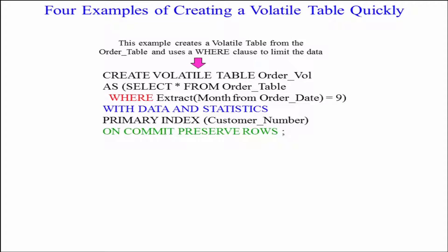And then lastly take a look at this. I can actually put a where clause in and not bring all of the columns or all of the data and that's the choices that I can make. I create the volatile table, I give it a name and as select everything from the order table where extract the month from the order date equals nine. I only want September orders and with data and statistics.